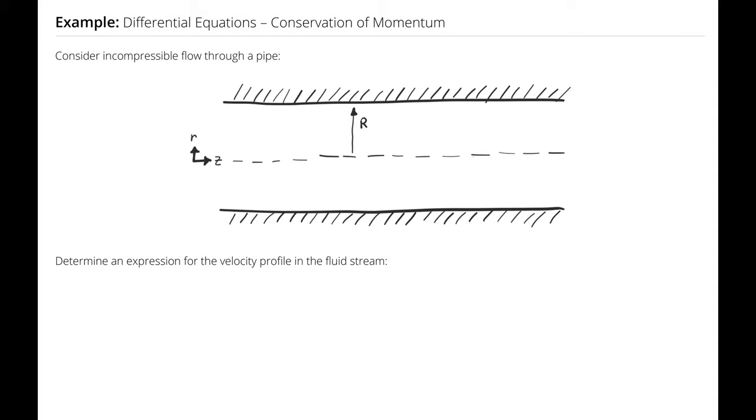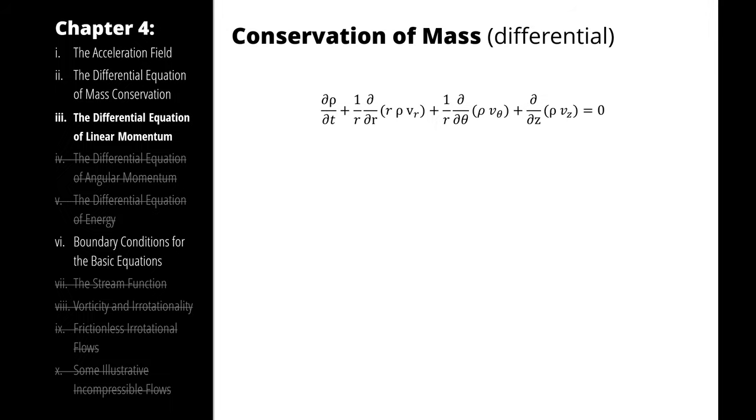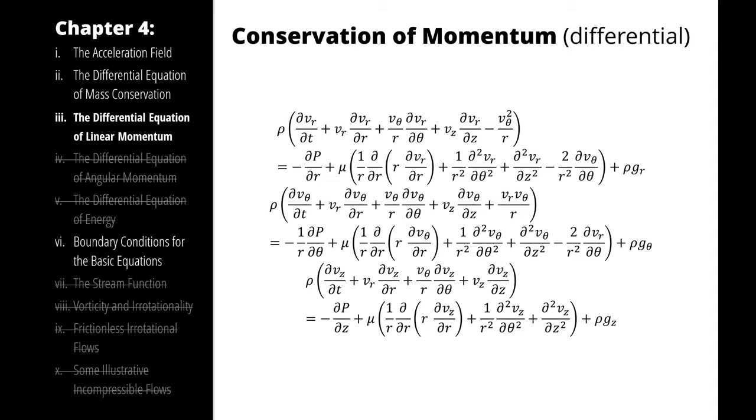With that set of assumptions in place, we can look at the conservation of mass again. But this time, our conservation of mass includes a bunch of scary thetas. Worse yet, our conservation of momentum includes even more scary thetas. Those are a result of the polar coordinate system that we're using here. And even though it's intimidating looking, it's not actually that bad to work with, because just like in the Cartesian coordinate system, most of these terms are going to cancel.